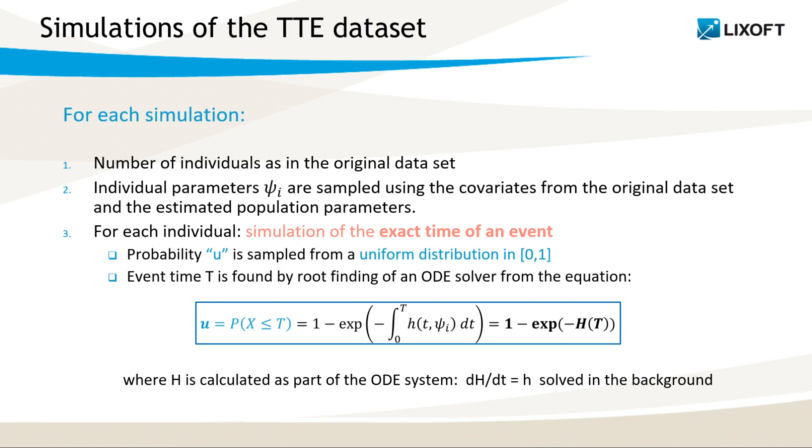How to simulate now a time when an event occurs? Let's define U as a probability that an event occurs before a certain time. This probability can be computed using the cumulative hazard function, capital H. If we sample a value of this probability from a uniform 0-1 distribution, then in the highlighted equation, time t becomes the unknown. It can be found using a root-finding method from an ODE solver. Note here that in the model only the hazard function H is given, so the cumulative hazard function has to be calculated simultaneously by solving an additional ODE.